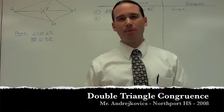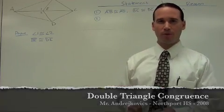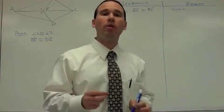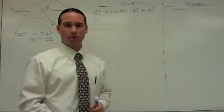Okay, so this is a fairly typical double triangle congruence proof. Double triangle congruence means that in order to prove the statement we want, we're going to have to show that two different pairs of triangles are congruent.